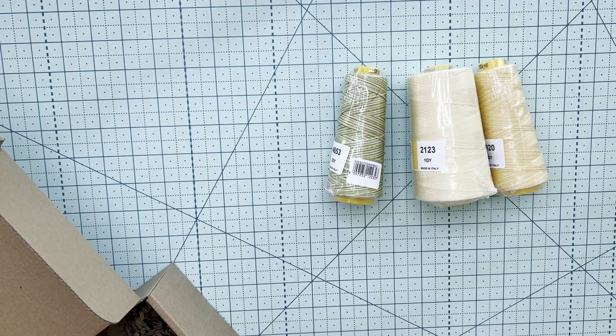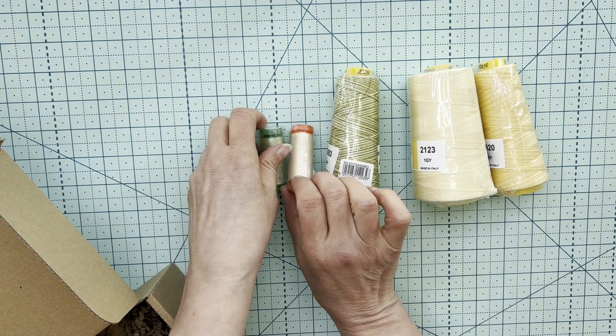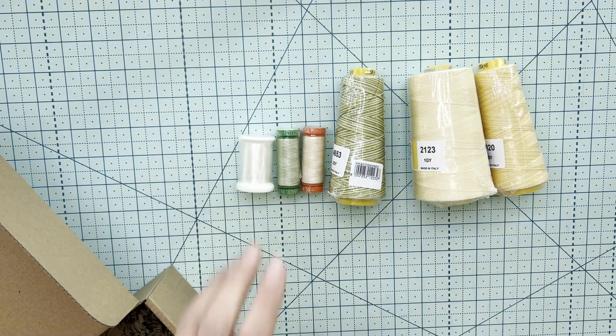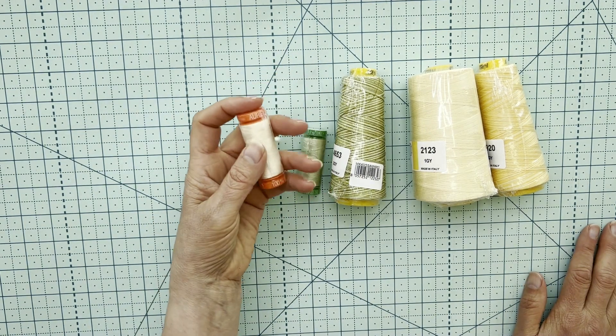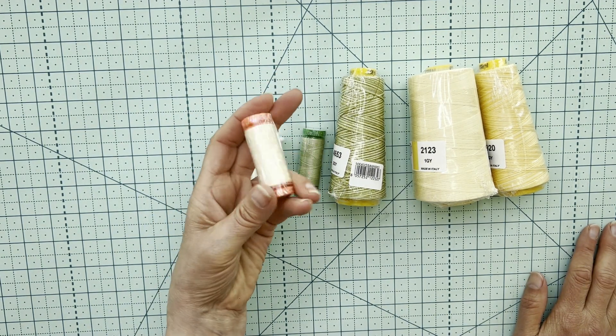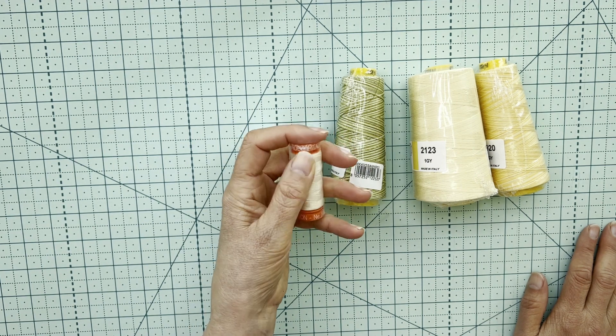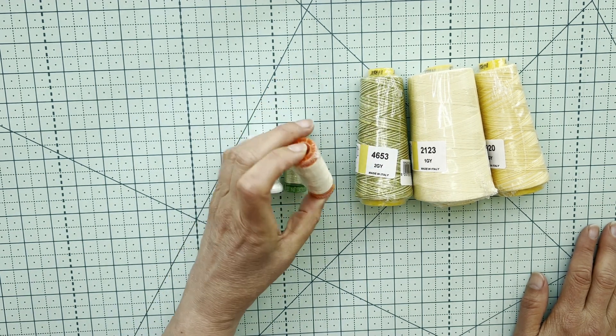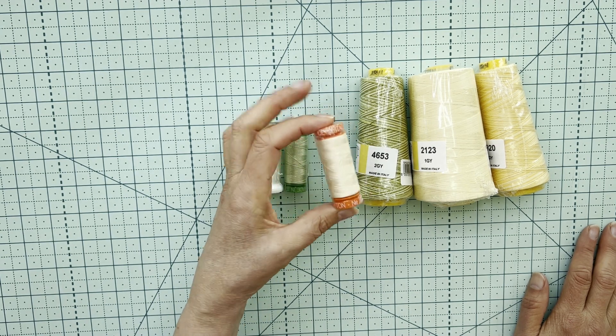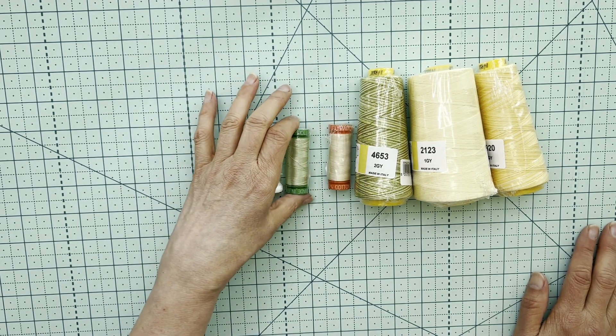And we also have three more things. Let me just get that box out of the way. We have got a spool of 2050 weight. So that's a kind of a light beige and a great one for just doing standard piecing. Pretty much goes with a lot of things.